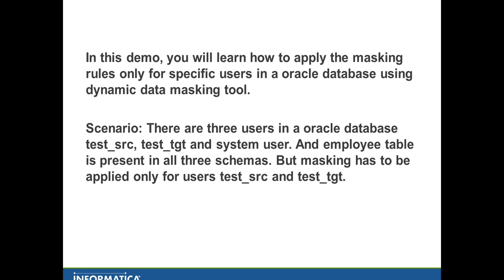What is the dynamic data masking tool? It's a data security tool that operates between an application and a database to prevent unauthorized access to sensitive information. It basically intercepts the request sent to the DB, applies a data masking rule to mask the data before it is sent back to the application.